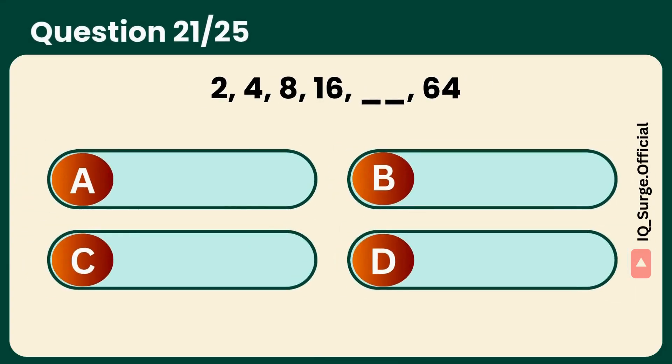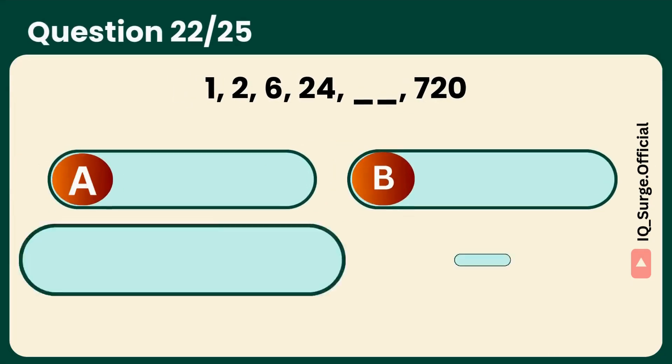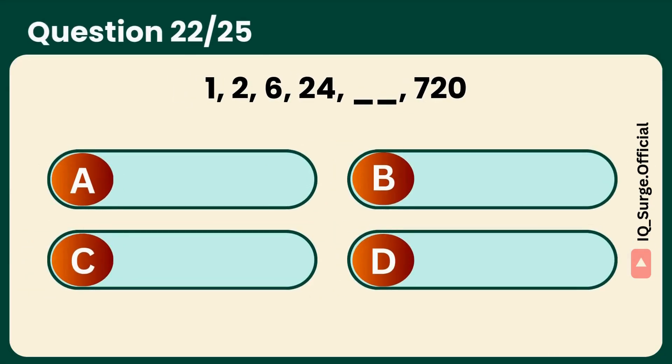This one's all about doubling. What comes here? Spot on. It's thirty-two. Looks like factorials. Do you see it? Correct. It's one twenty. A sharp one.